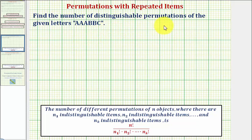We want to find the number of distinguishable permutations of the given letters. First, remember a permutation means the order does matter. If the order did not matter, we'd be talking about a combination.